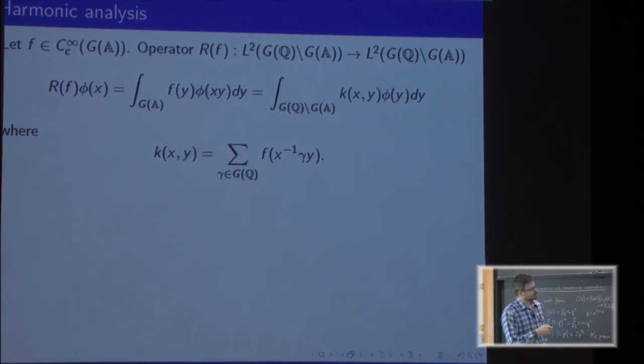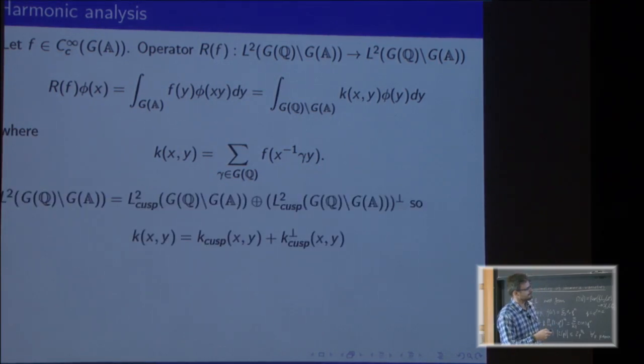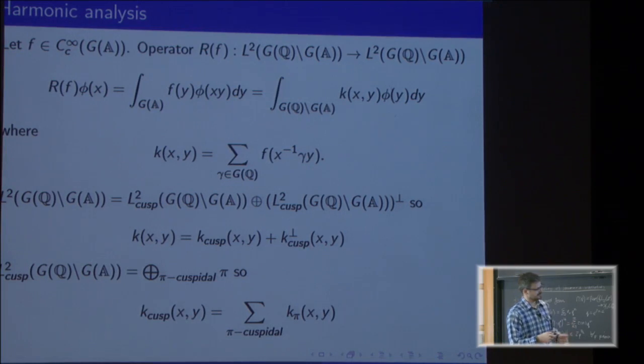The kernel K(x,y) is the sum over rational points of f(x⁻¹γy). This operator preserves G-invariant spaces. If we decompose our L² into cuspidal part and orthogonal to the cuspidal part, the kernel will decompose accordingly.